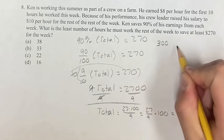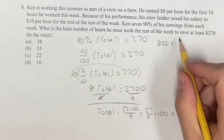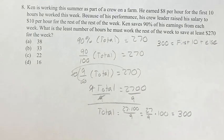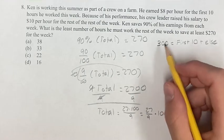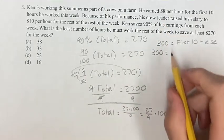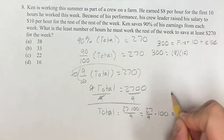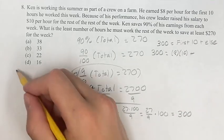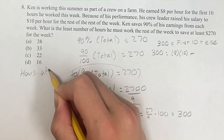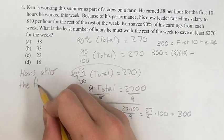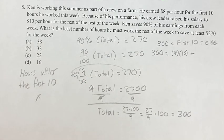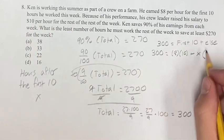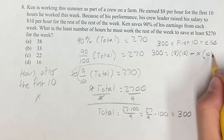So $300 is going to be the total, which means it's the amount he made in the first 10 hours plus everything else. How much did he make in the first 10 hours? He made $8 an hour for 10 hours, so he made $80. Plus, let's call the number of hours he worked after the first 10 'x'. So x times $10 per hour is going to be the amount of money he makes for the rest of the week.